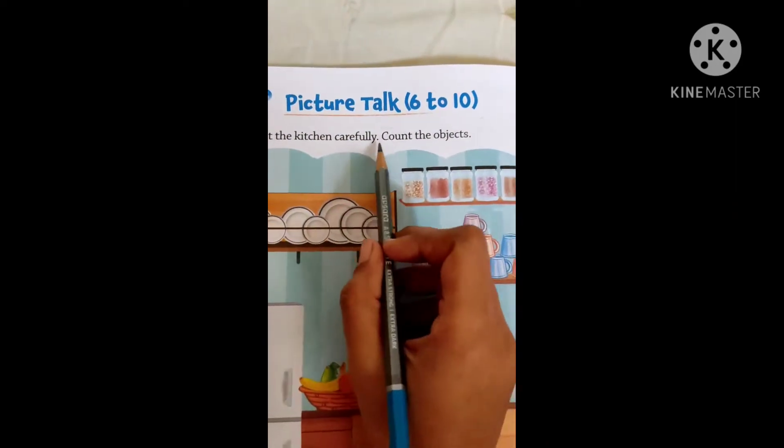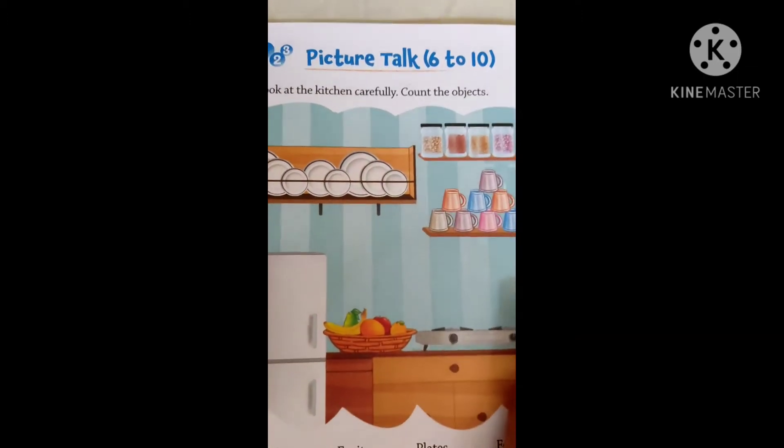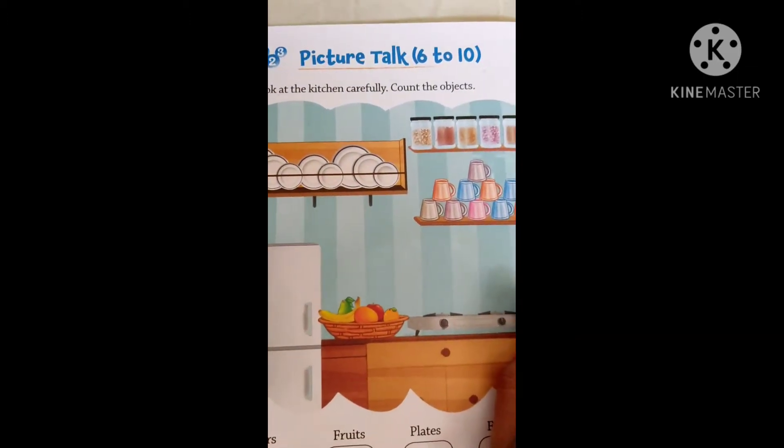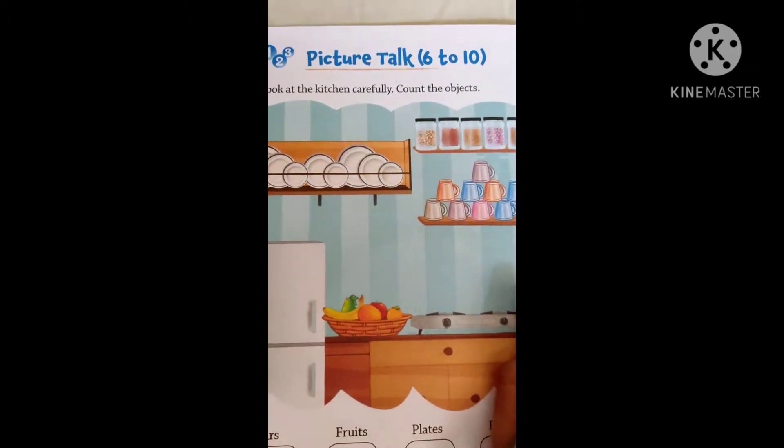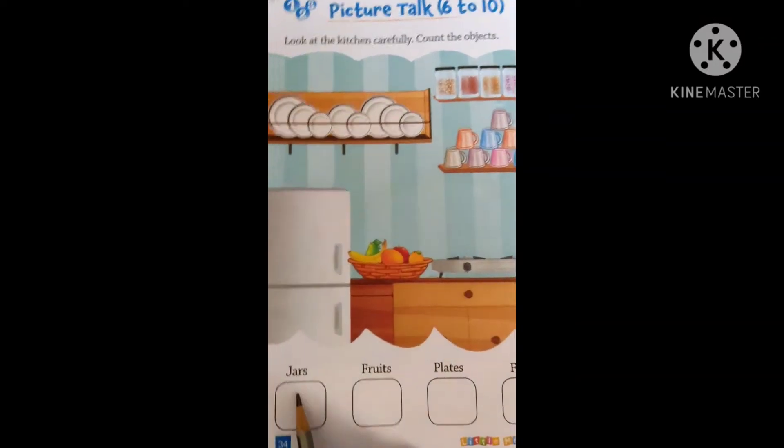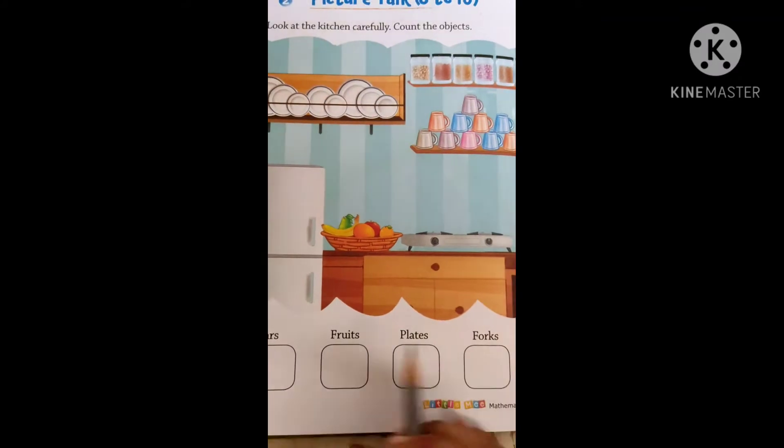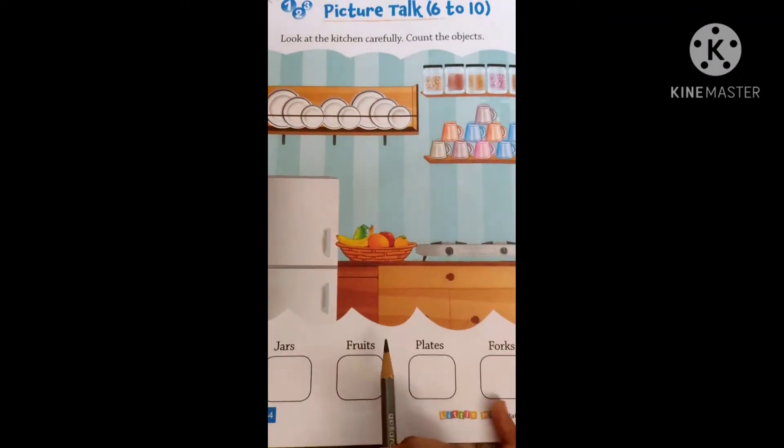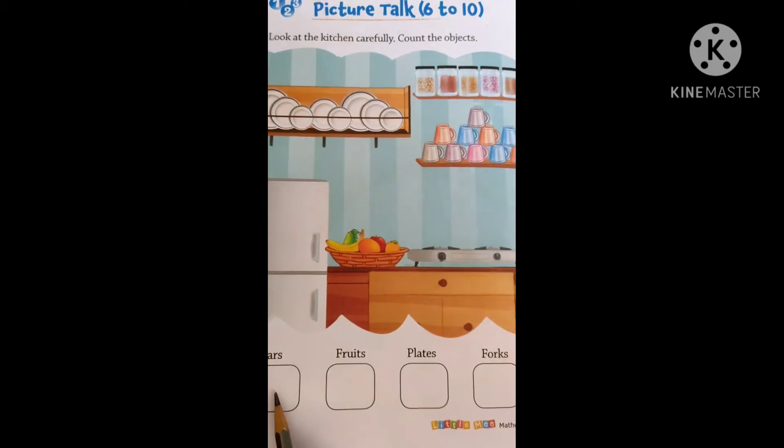Look at the kitchen carefully, count the objects. Now see, we have already learned the numbers 1 to 10. Now we are going to see from 6 to 10 what things are there. The boxes are also given to you and on that the names are given. We have to count and then we have to write the numbers in the box.